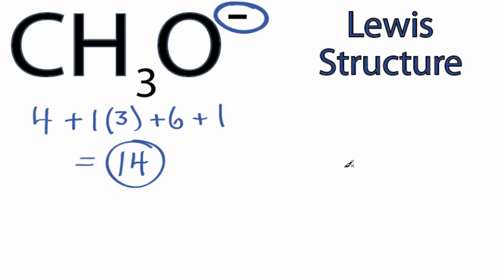Hydrogens will go on the outside of Lewis structures, and we'll put the least electronegative atom in the center. In this case, carbon is the least electronegative atom. So we'll put carbon in the center, hydrogens around it, and the oxygen on the outside.